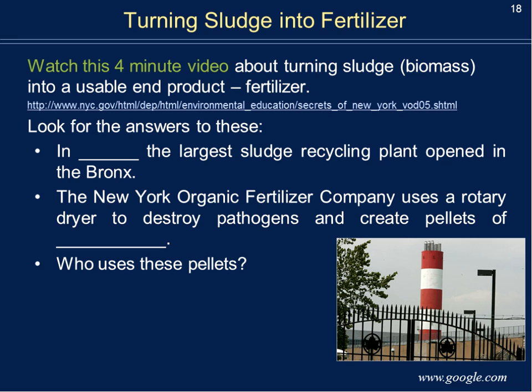What are some things you can do with sludge? Quite a few companies are entrepreneurial and recognize that there's something useful that can be done with it. Watch this four-minute video about how you can turn sludge or biomass into something usable like fertilizer. Questions to look for: In what year did the largest sludge recycling plant open in the Bronx? What does the New York Organic Fertilizer Company use a rotary dryer to create pellets of? And who uses these pellets and what do they do with them?